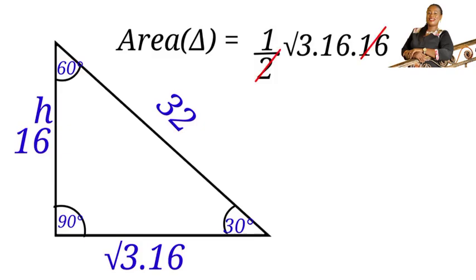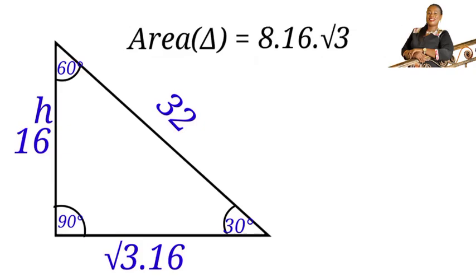When we have this, 2 will divide 16, we'll have 8 times 16 times the square root of 3. So 8 times 16 is 128, and the square root of 3 is 1.73. When we multiply that out, we have 221.7 square units.